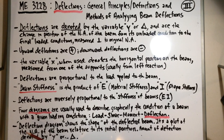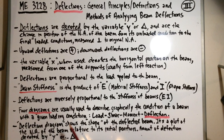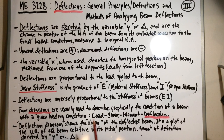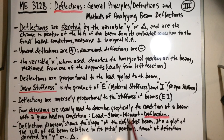When looking at deflections overall, there are four diagrams used to graphically describe the condition of a beam under a given loading situation. You're familiar with the first three: the load diagram showing loads and reactions, the shear diagram showing positive and negative shear, and the moment diagram derived from the shear diagram. The fourth is the deflection diagram.